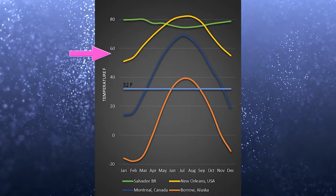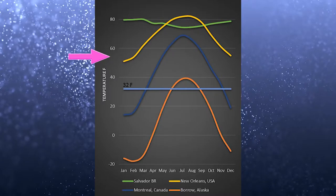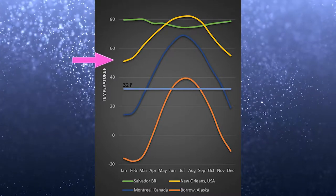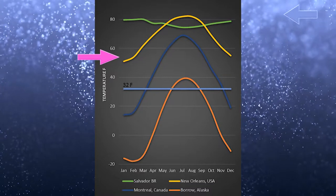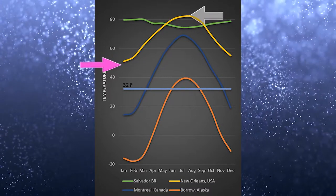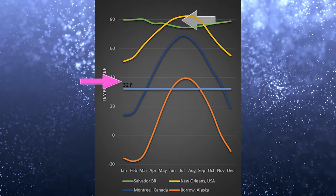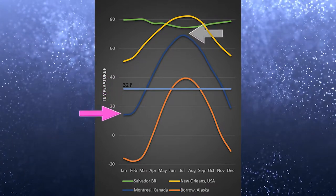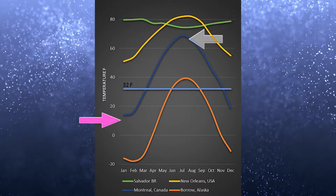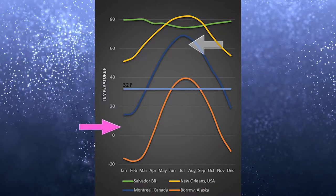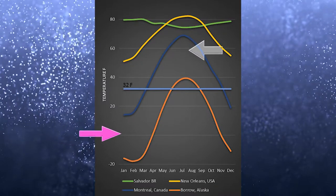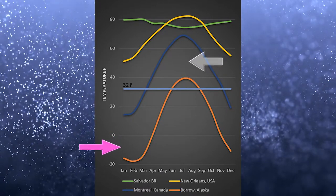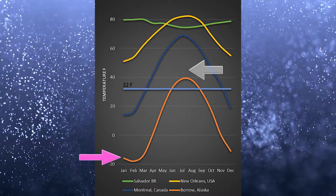The temperature is pretty much the same. If you go a little further to New Orleans, you start to see the difference between winter and summer — that's called the temperature range. If you go a little further north to Montreal, Canada, you see how summer goes to maybe 70 degrees, but several months of the year the average temperature is below the freezing point.